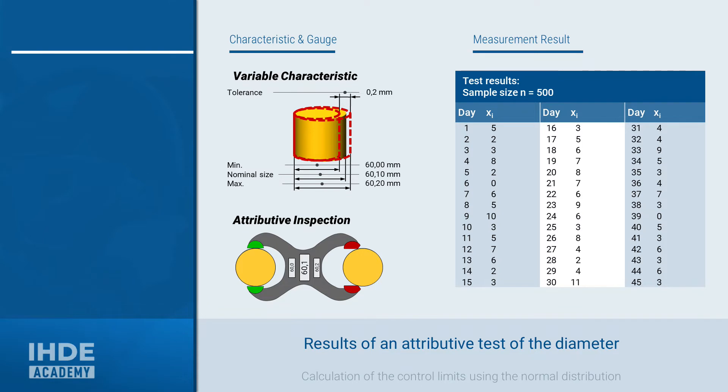The results of the tests are shown on the table on the right. A sample size of 500 parts was tested each day. This was done for 45 consecutive days. Xi is the number of defective parts found in each sample.